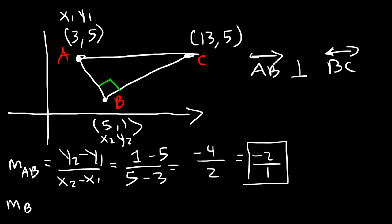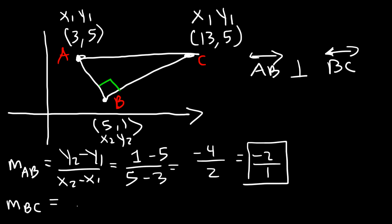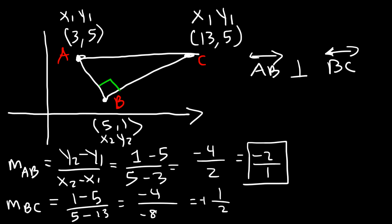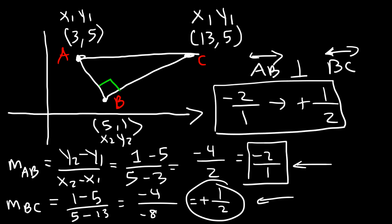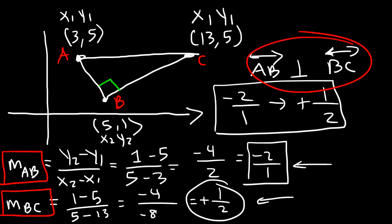Now let's calculate the slope of line BC. Using B as (x2, y2) and C as (x1, y1): y2 is 1, y1 is 5, x2 is 5, x1 is 13. 1 minus 5 is negative 4, and 5 minus 13 is negative 8. Negative 4 over negative 8 reduces to 1 over 2. Notice that these two slopes are negative reciprocals of each other — starting with negative 2 over 1, flip the fraction and change the sign to get positive 1 over 2. This means line AB and BC are perpendicular, so this triangle is indeed a right triangle.